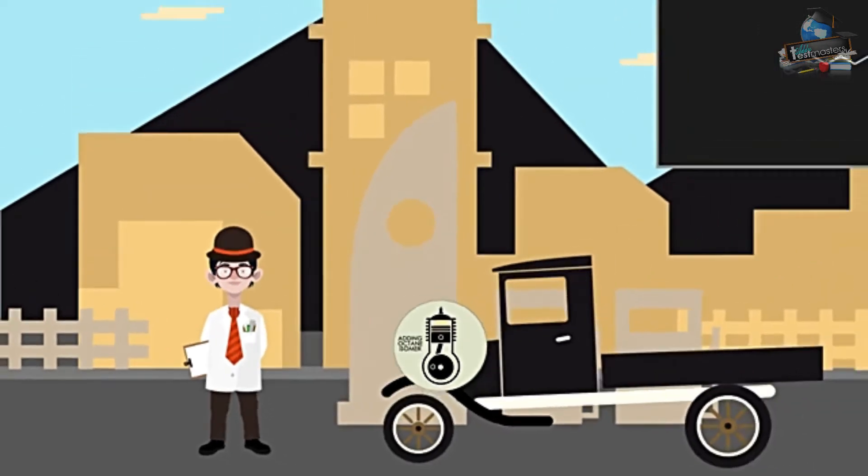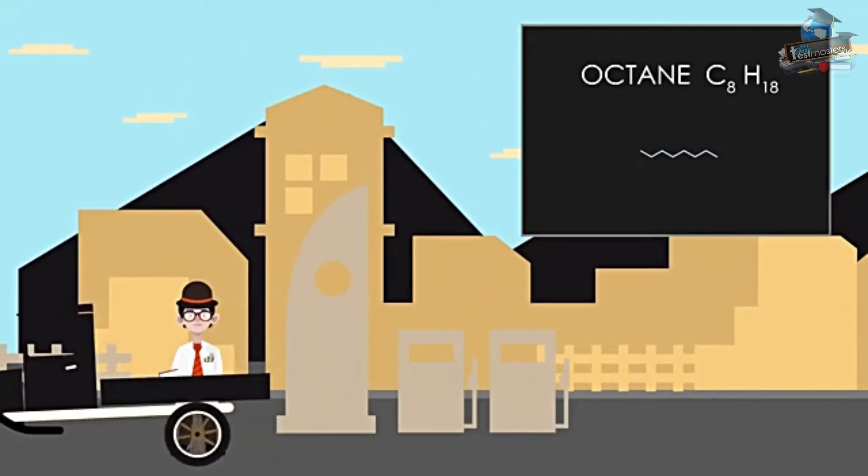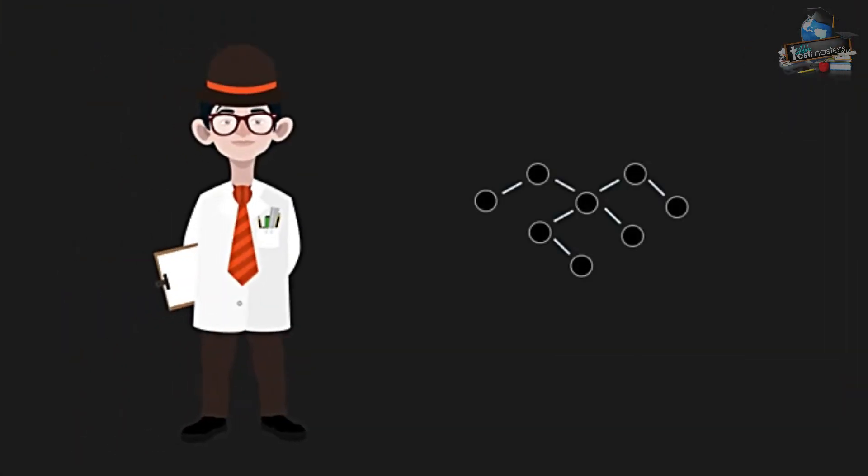If an isomer of octane was used, the petrol burnt more smoothly. Look carefully—there are eight carbon atoms so it is a structural isomer of octane. But what is its formal name?